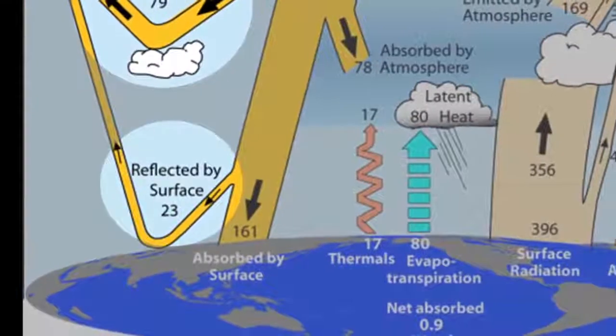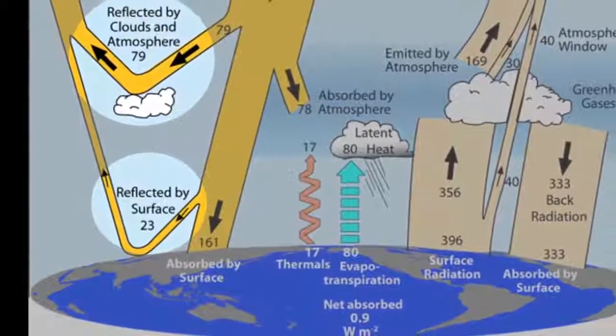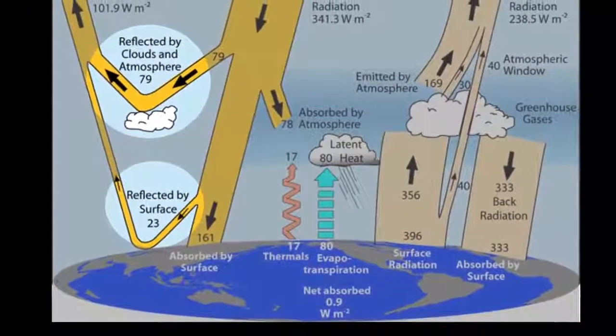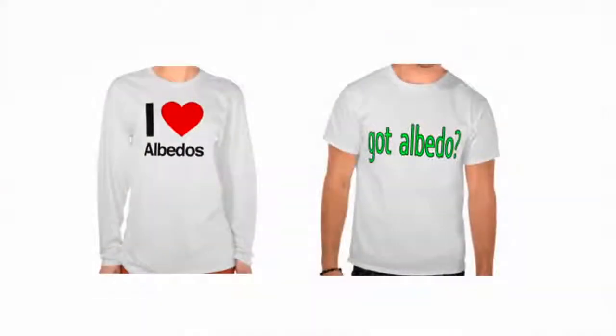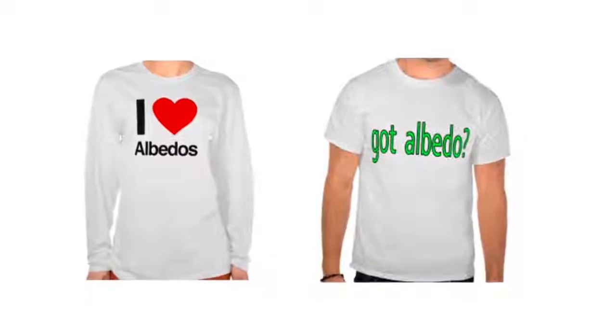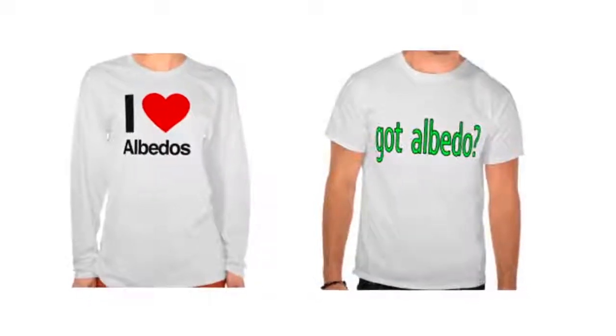At Earth's surface, another portion is reflected and exits. We call the reflectivity of a surface its albedo. Albedo is the reason people wear light colors in the summer to reflect rather than absorb solar energy.